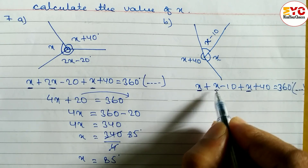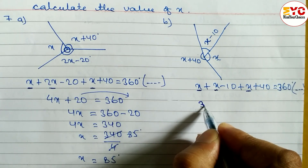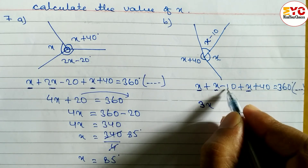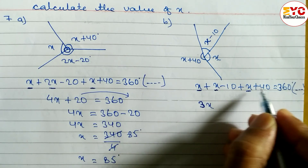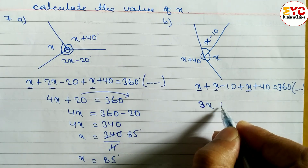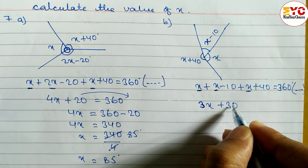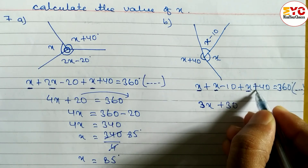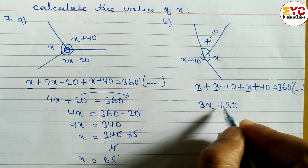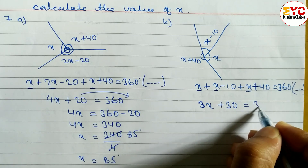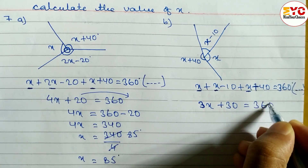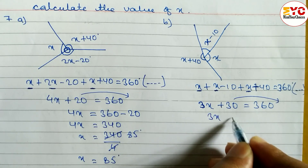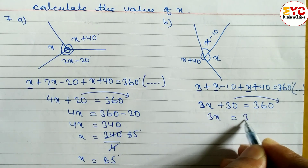For the like terms: x plus x plus x equals 3x. For the constants: minus 10 plus 40 gives plus 30, because 40 is greater, so the result is positive. We write 3x plus 30 equals 360 degrees. Taking 30 to the right side: 3x equals 360 minus 30.